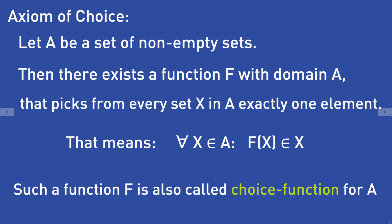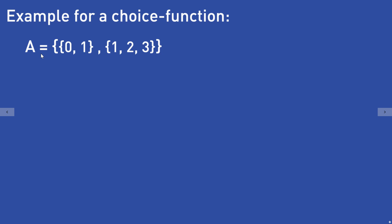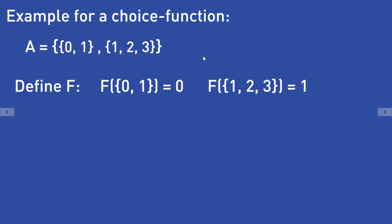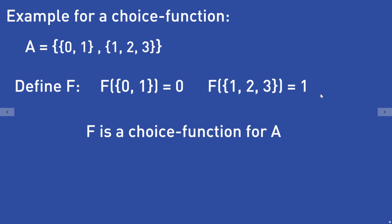Let's take a look at an example where we can write down such a choice function explicitly. Let A be the following set of non-empty sets — A contains the set {0, 1} and the set {1, 2, 3}. The function f that assigns to the first set the number 0 and to the second set the number 1 is a choice function for A. In this case you can write down a choice function explicitly and don't need the axiom of choice.